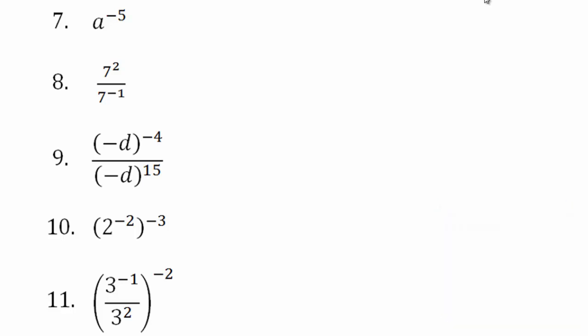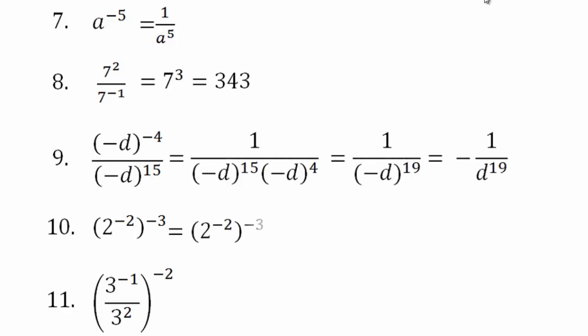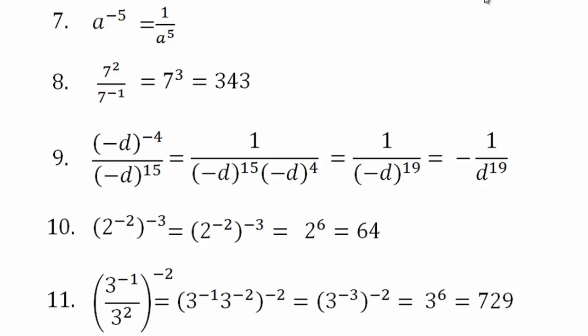Pause the video and do the problems — if you don't, you're not going to know if you understand the material. There's no point in going forward if you don't get this part. If you have trouble, let us know. a to the negative 5: the negative exponent makes it a positive exponent on the bottom. Here we have negative 7 to the negative 1 power — you subtract the exponents, or think of it as 7 to the 1 in the numerator, and you end up with 3 sevenths. You can multiply that out.